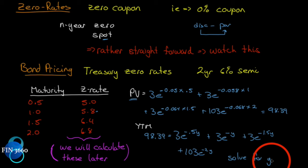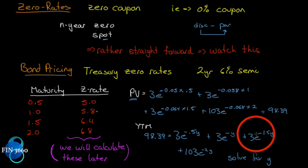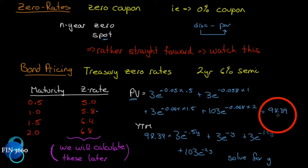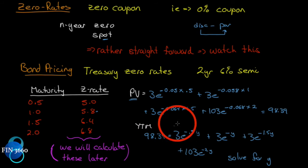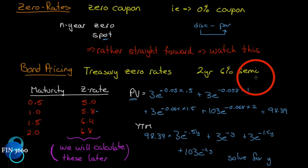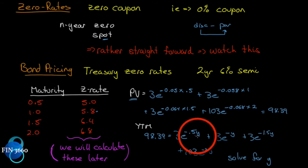You can use a spreadsheet with a goal-seek function for this. Solving iteratively is difficult, but one approach is to note that 98.39 is a discount bond, meaning the market rate is higher than six percent. You might start at seven percent, then try 6.5%, and slowly converge. A goal-seek would be better — it's a rather difficult calculation to do algebraically.